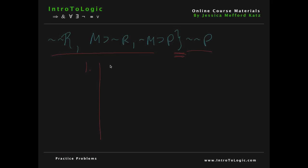Our first premise is 'not not r'. The second premise is 'if m, then not r'. And the third premise is 'if not m, then p'. Then we'll write our conclusion that we're trying to derive at the bottom, which will be 'not not p'.